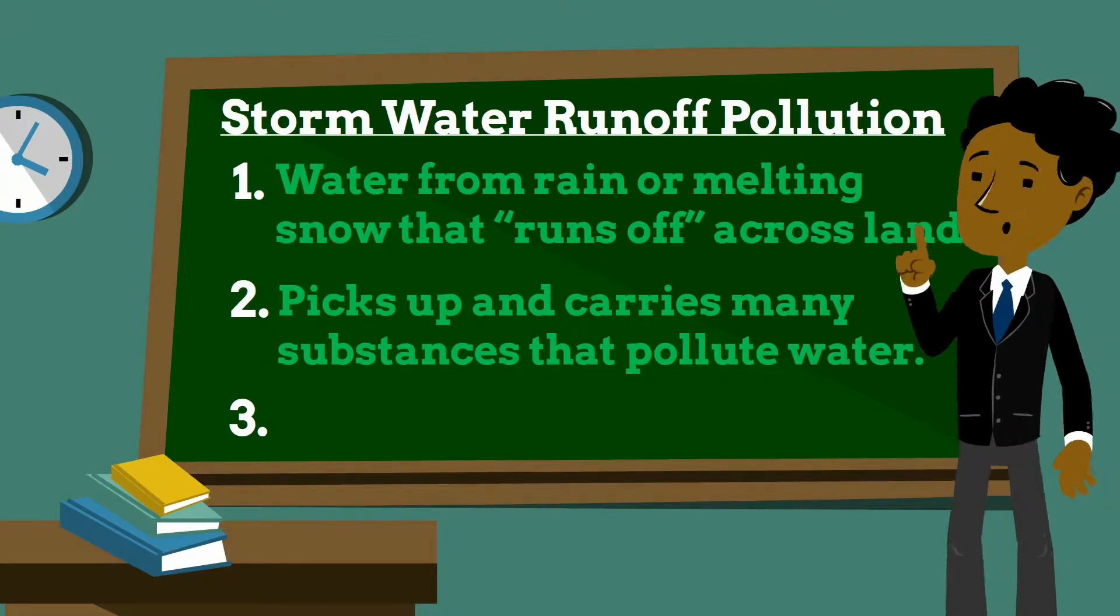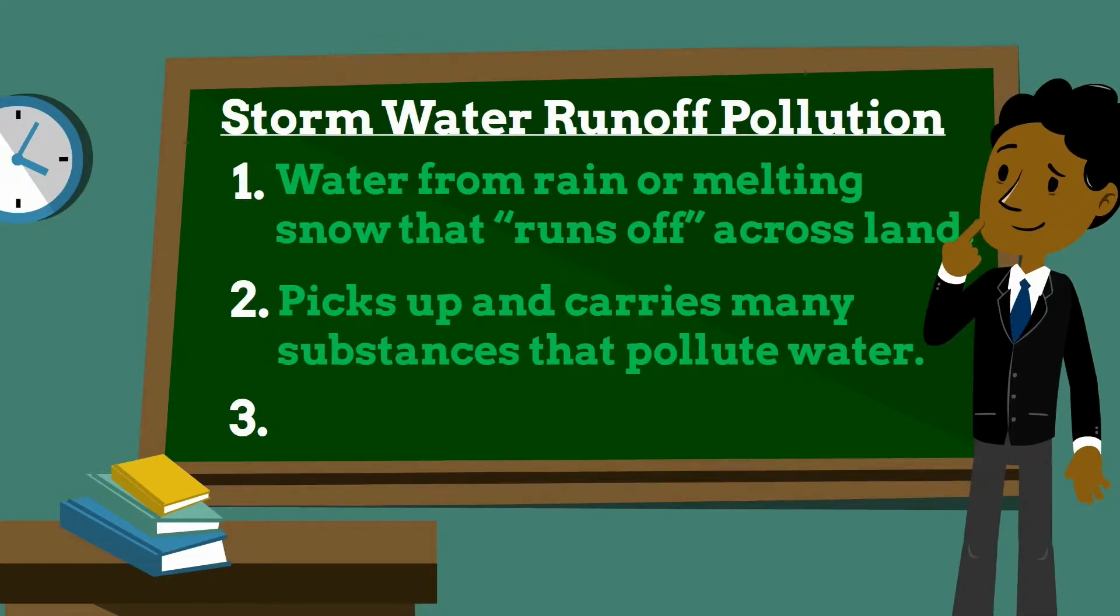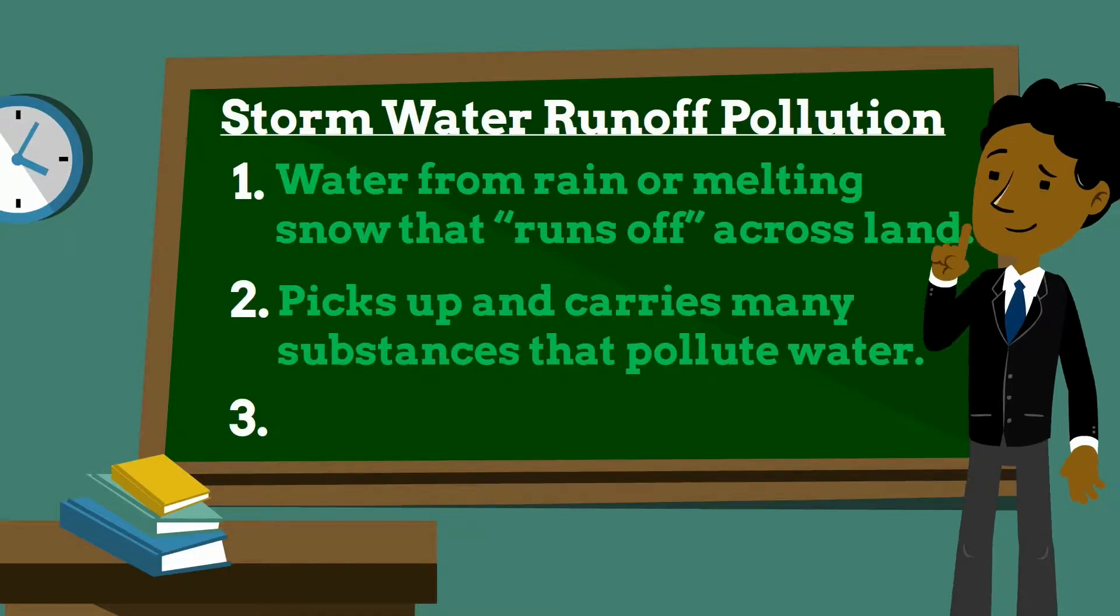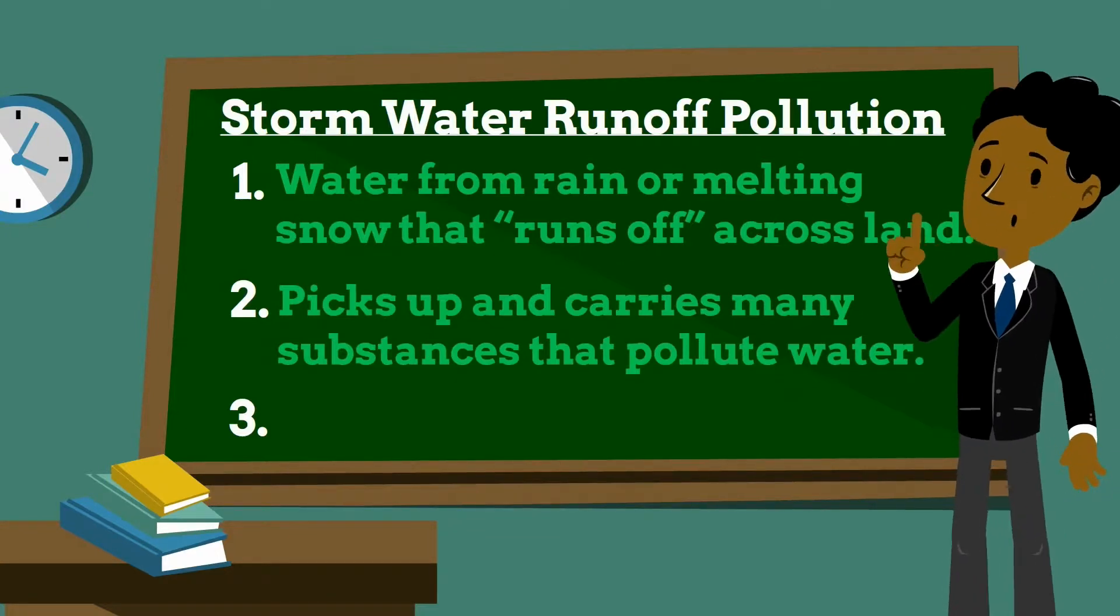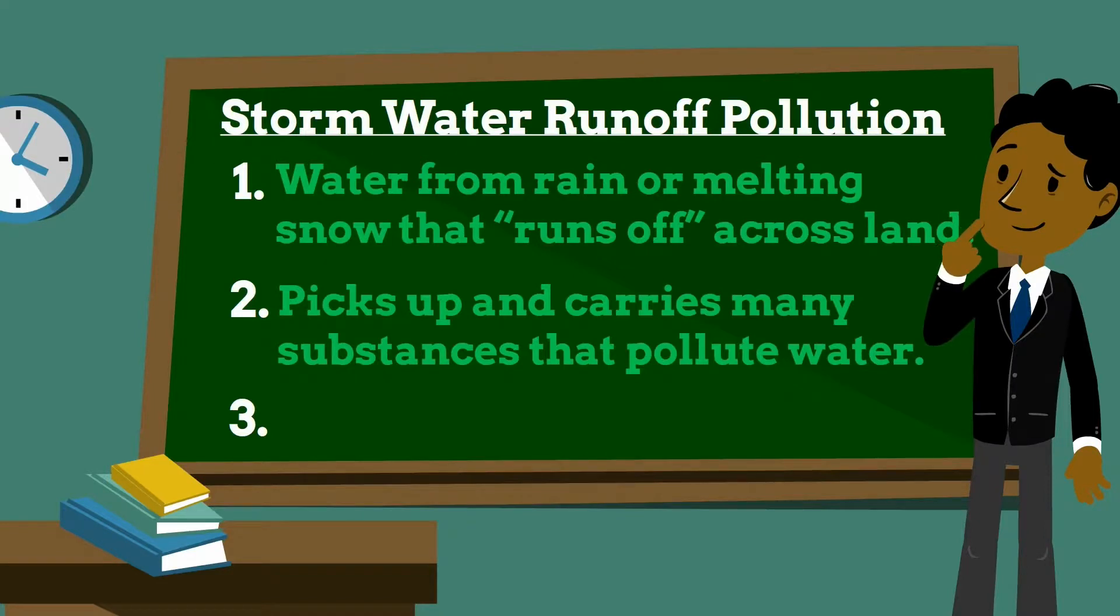Some, like pesticides, fertilizers, oils, and soaps, are harmful in any quantity. Others, like sediment from construction, heavy metals from roads, bare soil, or agricultural land, or even grass clippings and leaves, can harm creeks, rivers, and lakes in sufficient quantities.